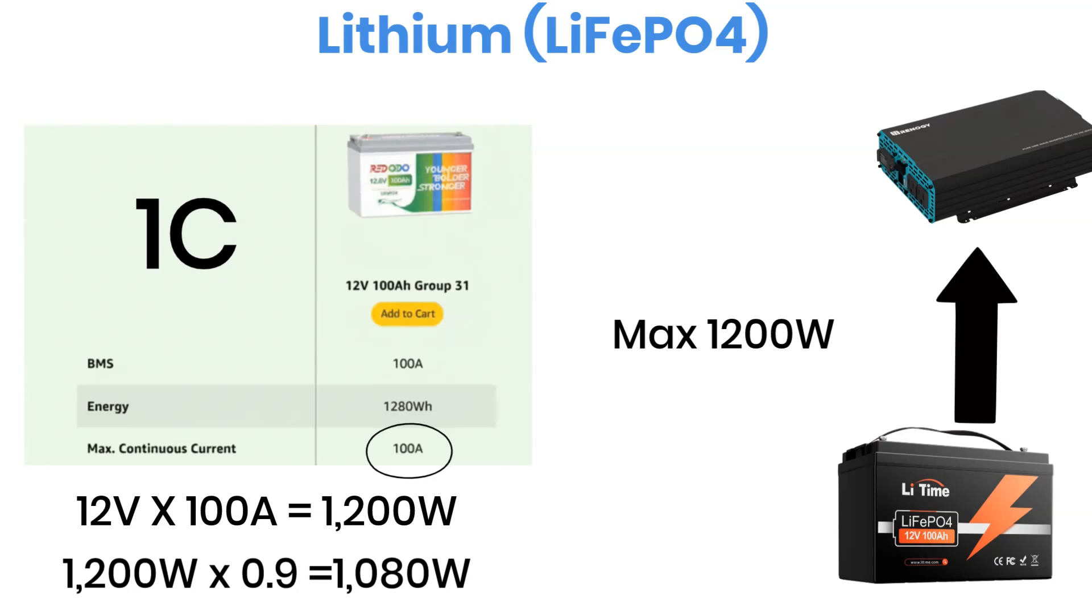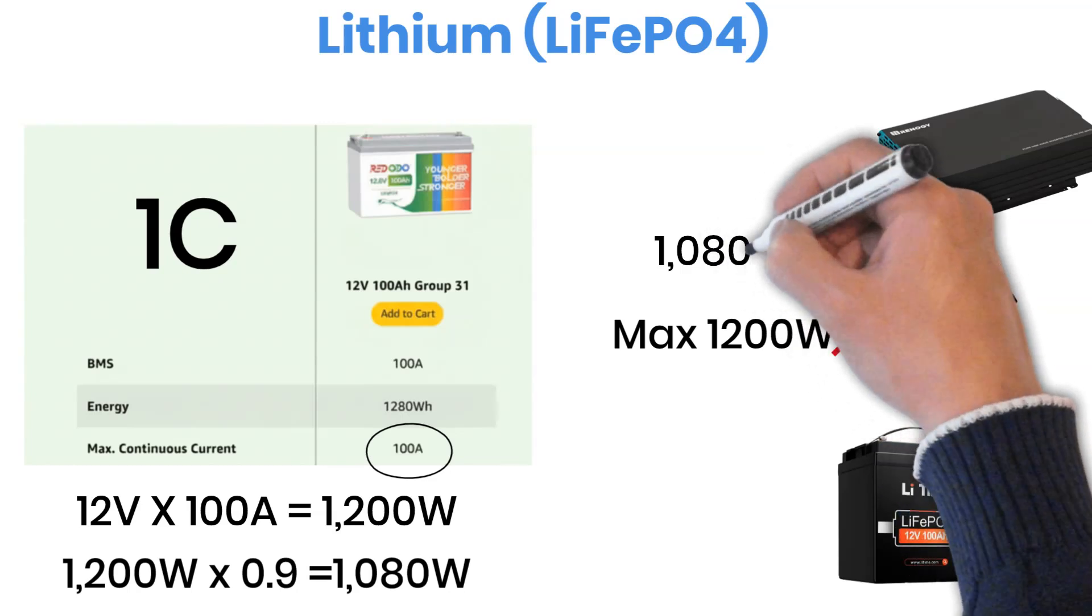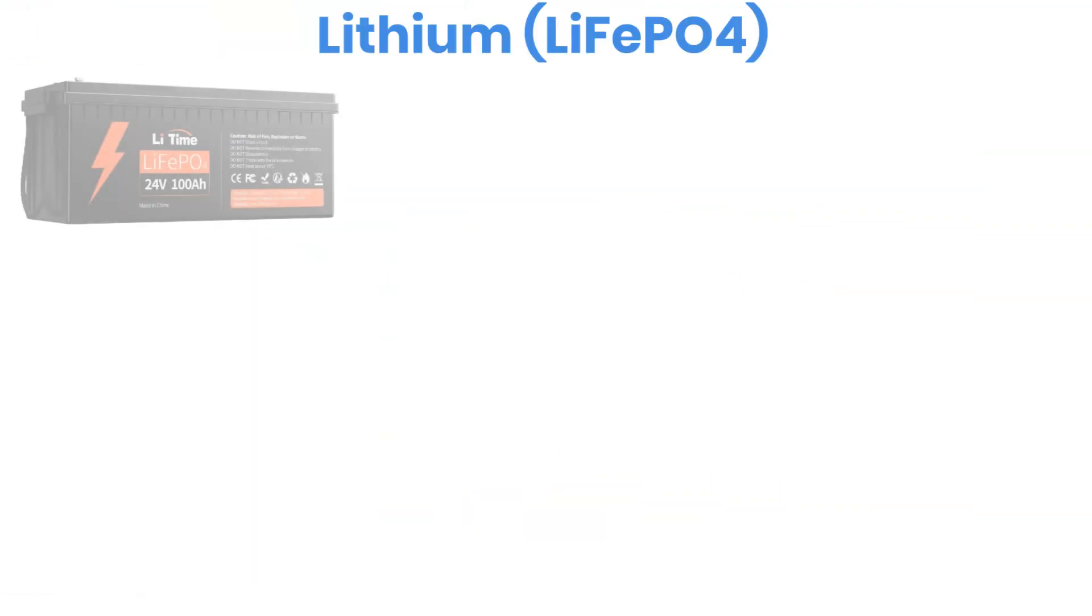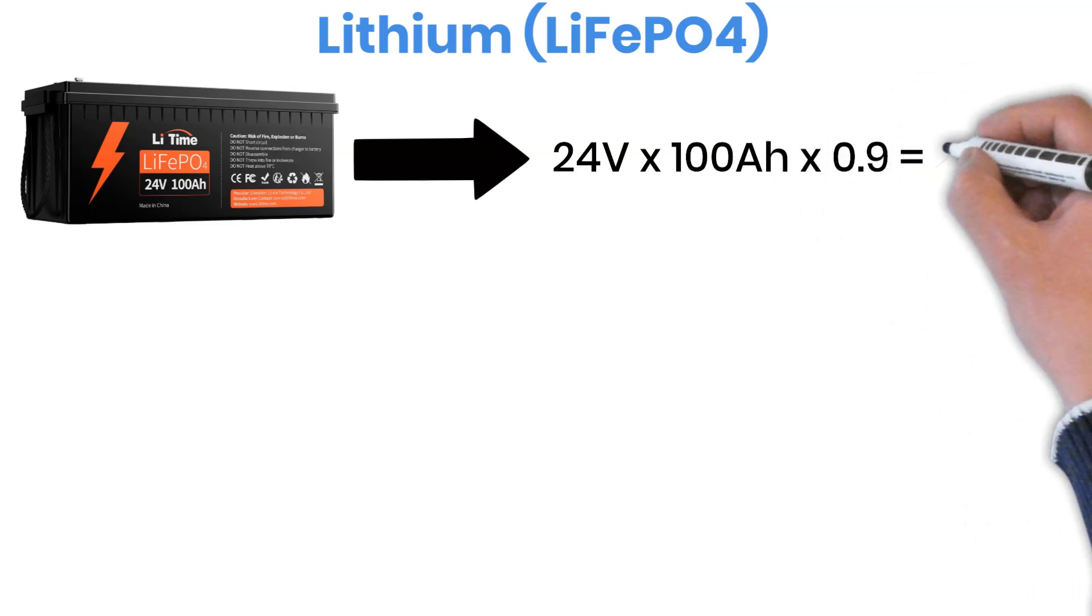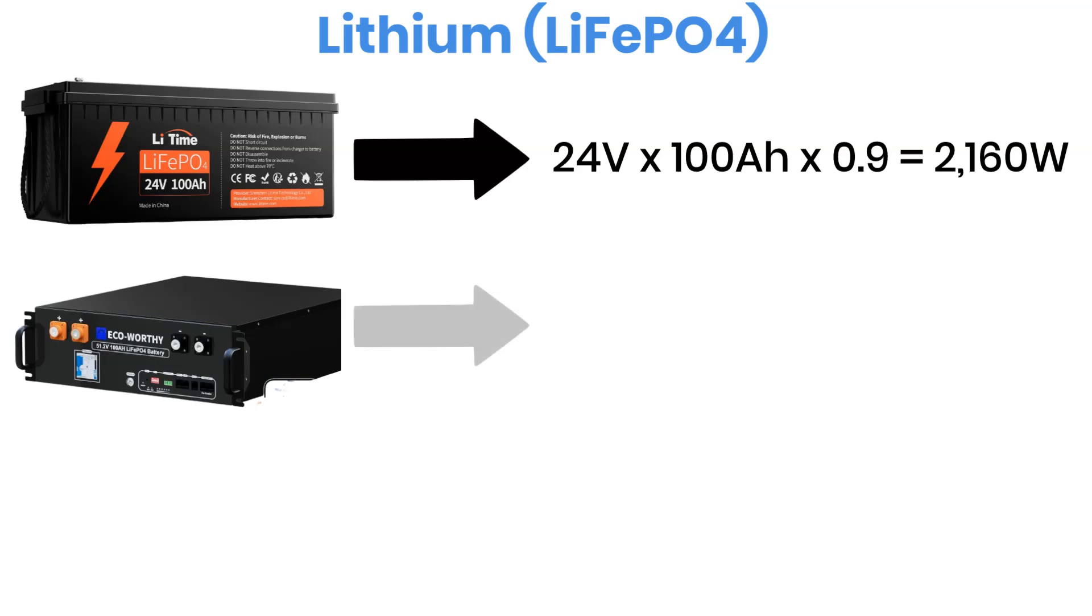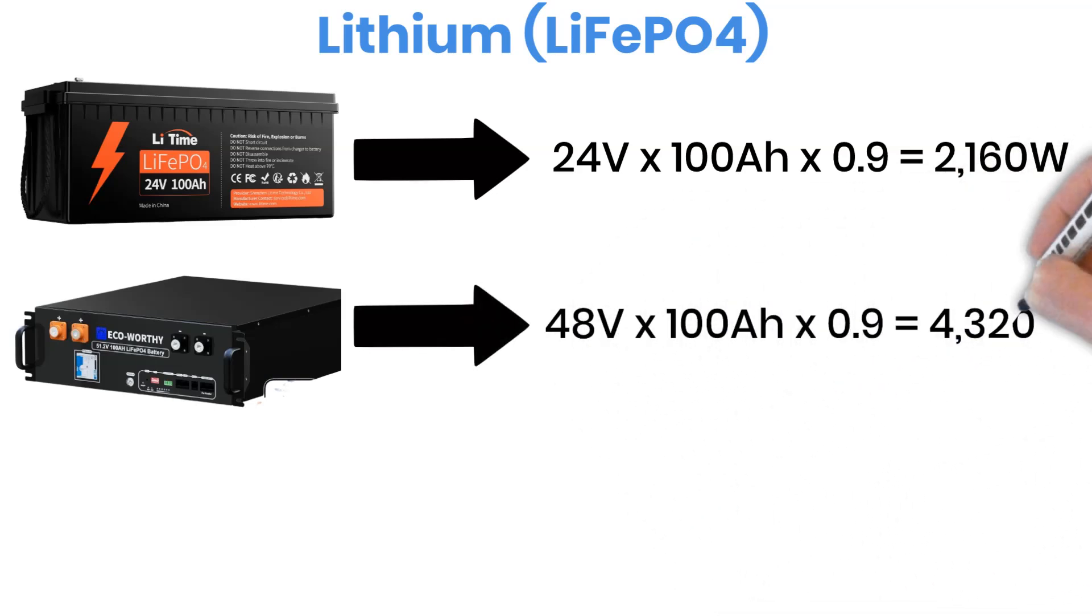That's why, for a 12 volt 100 amp hour lithium battery, the biggest inverter you should pick is roughly 1,000 watts. If you've got a 24 volt 100 amp hour lithium battery, then the limit doubles, around 2,000 watts. And for a 48 volt 100 amp hour server type battery, you can safely go up to about 4,000 watts.